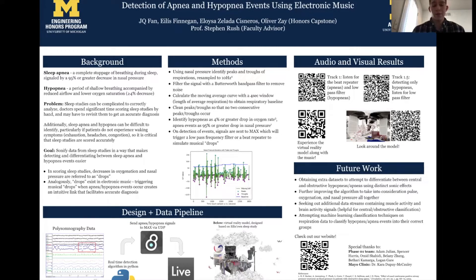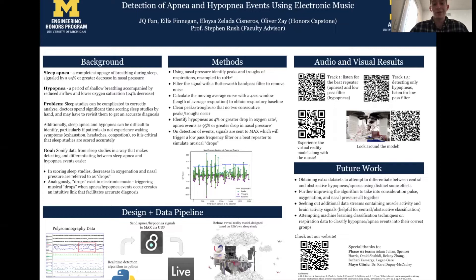The flow of our data worked as follows: we took the sleep study data and ran it through a real-time detection algorithm coded in Python. We calculated a respiratory baseline based on the nasal pressure and oxygen signals. We used a bandpass filter to remove high and low frequency noise, then calculated a moving average curve with a four-second window — the length of the average respiration — to obtain the respiratory baseline, which you can see in the graph at the center of the poster. We then identified sleep apnea and hypopnea events based on the definitions I gave.